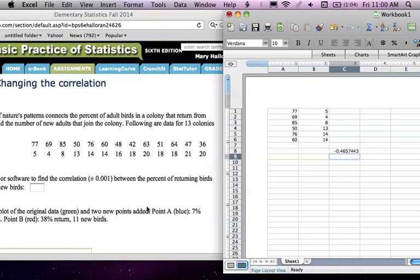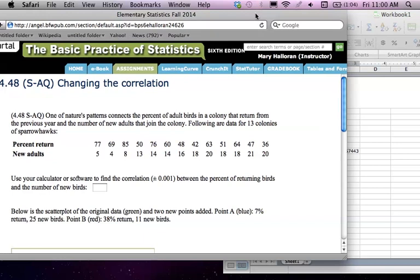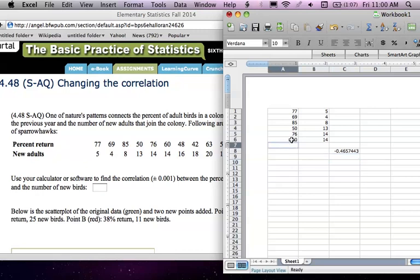Now, in this problem, it asks you to add another point. So down here, in this example, it's saying 7%, that's a percent return, so that's an X value, and 25 for number of birds. So that's the number of birds there. So I can just come to this list and add that extra point: 7, 25.